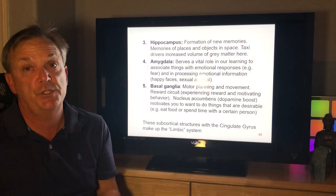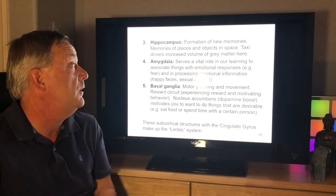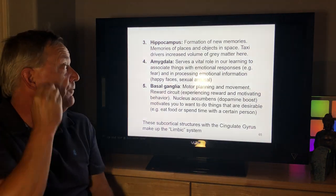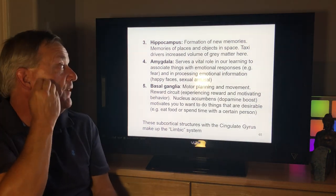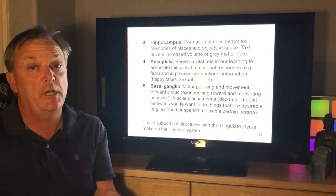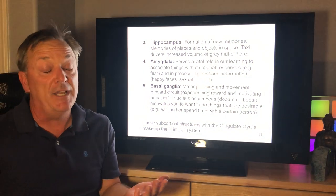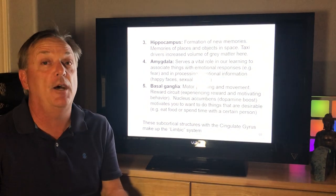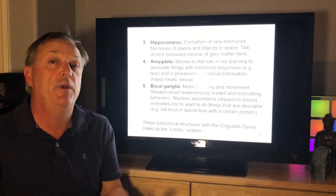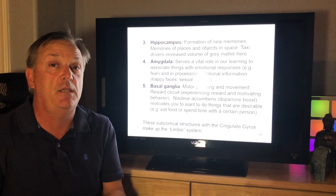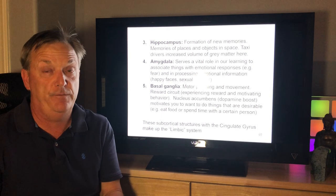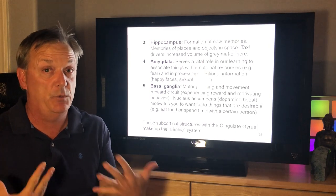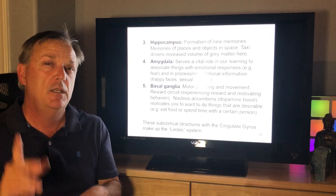The amygdala serves a vital role in learning to associate things with emotional responses — for example, fear — and in processing emotional information such as happy faces and sexual arousal. People with damage to the amygdala have significant problems because they can't recognize problematic or fearful situations that would normally protect them.